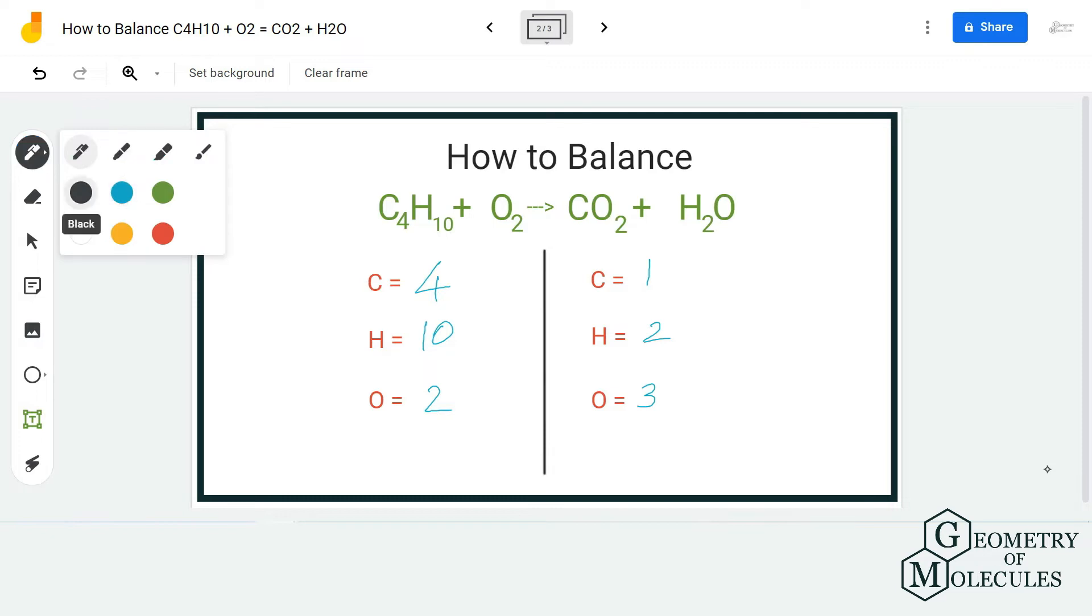Now to start balancing this equation, I am going to start and balance carbon atoms on both sides first. Here we have four carbon atoms on the reactant side but only one on the product side, so for fixing this I am going to add 4 as a coefficient and as a result we'll have four carbon atoms on both reactant and product side.